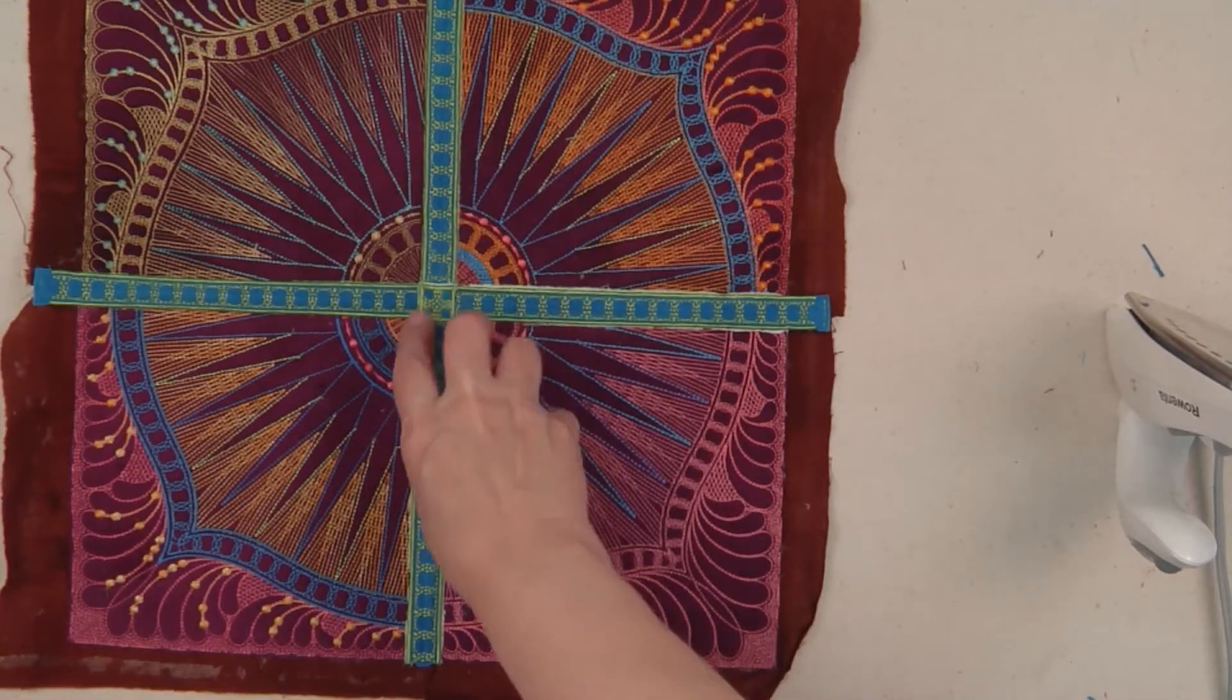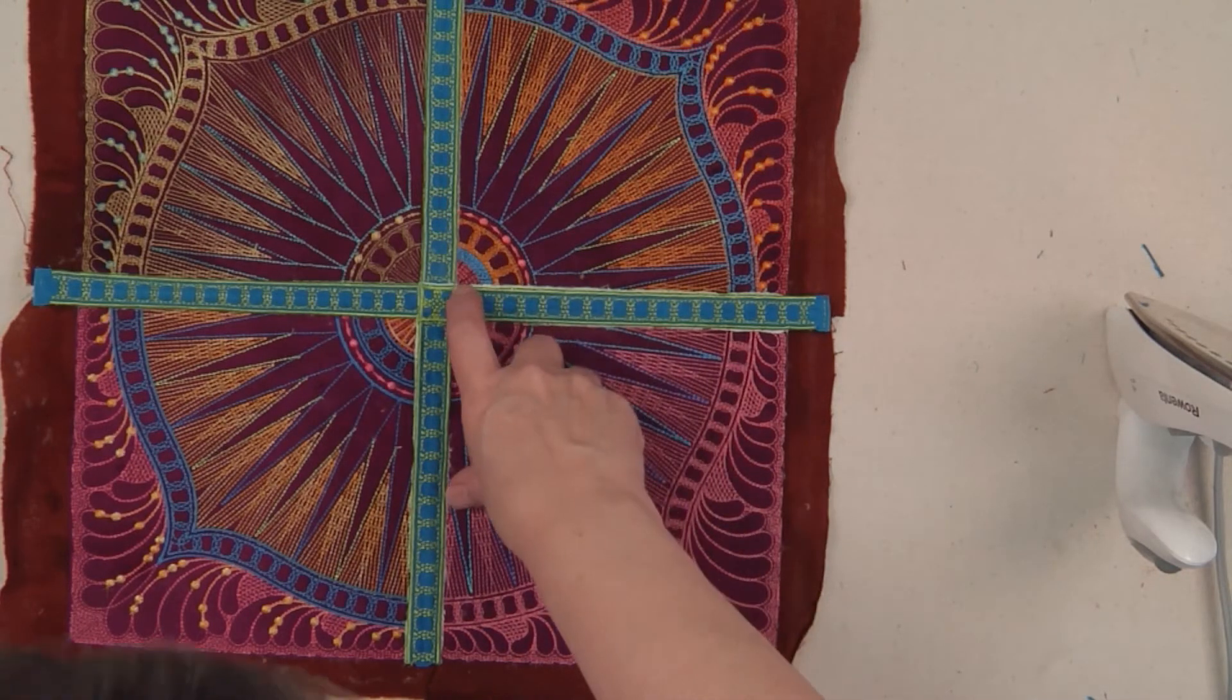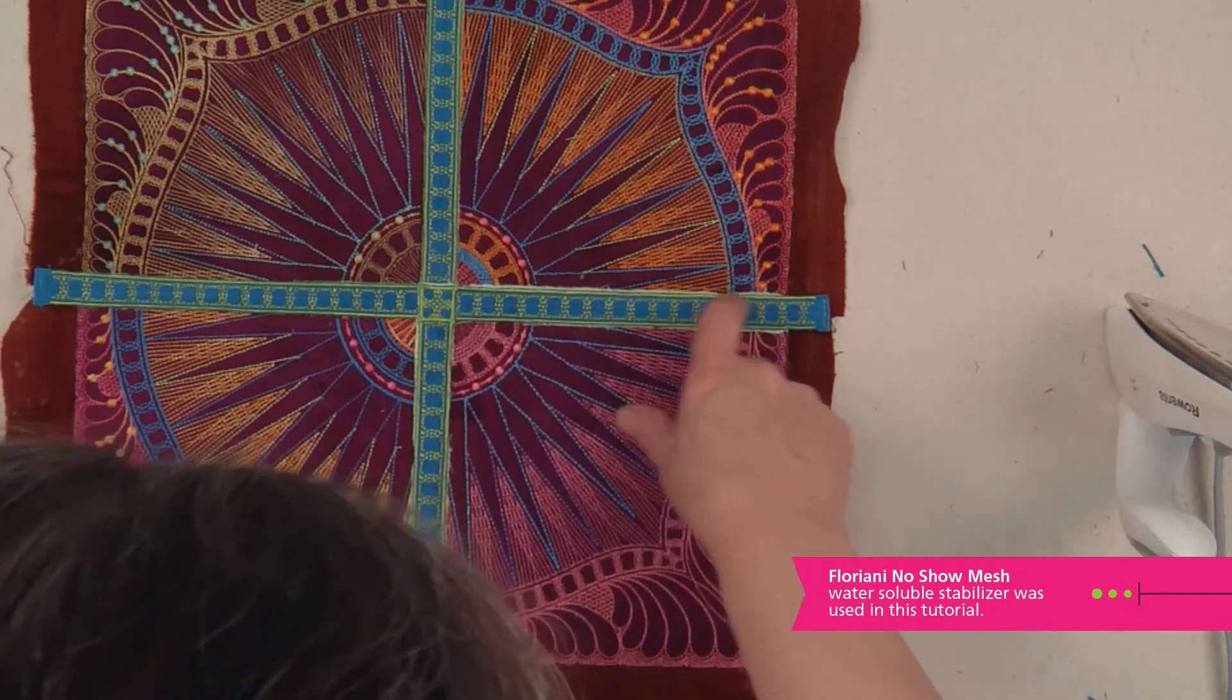When you're working on filigree work or anything that's been applicated and you use stabilizer, this is for the water-soluble stabilizer. Many times it will leave just like a white line.